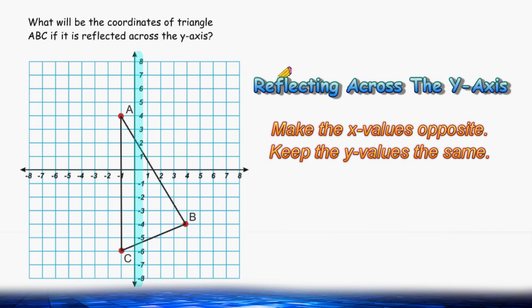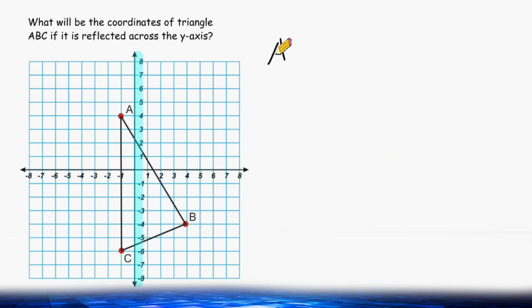So let's start by recording the location of all of the original points. Point A is currently located at negative 1, positive 4. Point B is currently located at positive 4, negative 4. And point C is currently located at negative 1, negative 6.